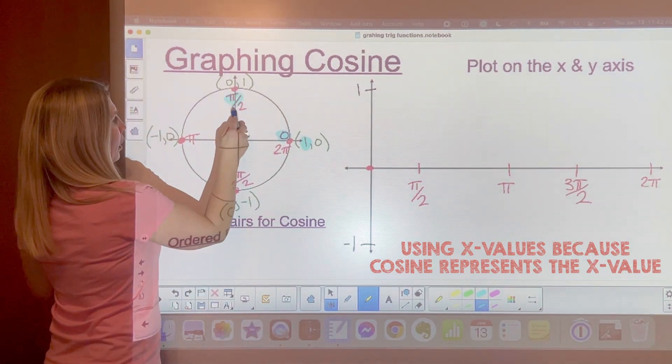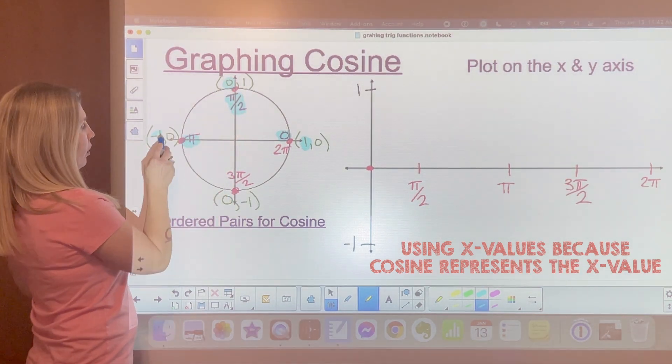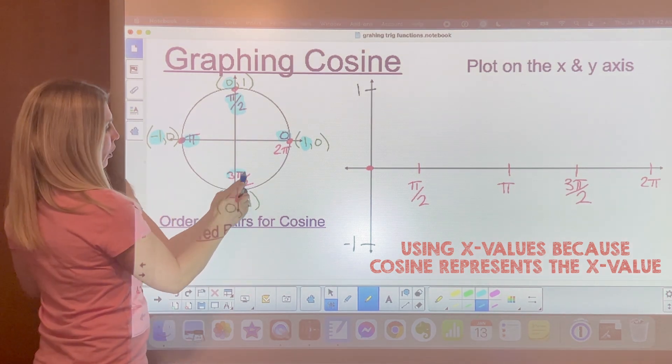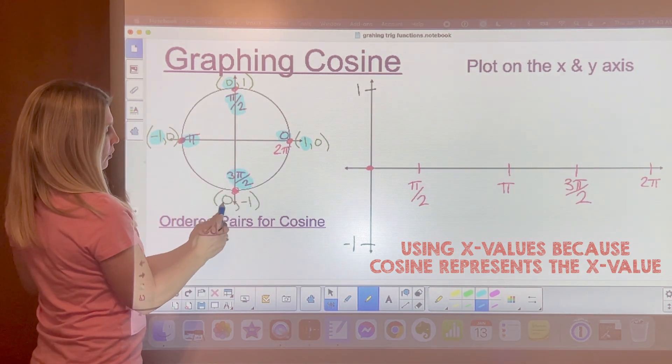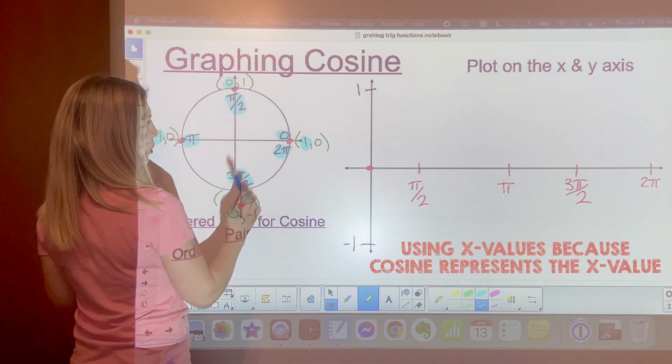Then at pi over 2 our x value is 0. At pi our x value is negative 1. And at 3 pi over 2 our x value is 0. And back here at 2 pi our x value again is 1.